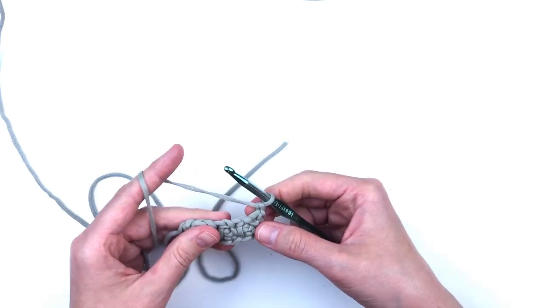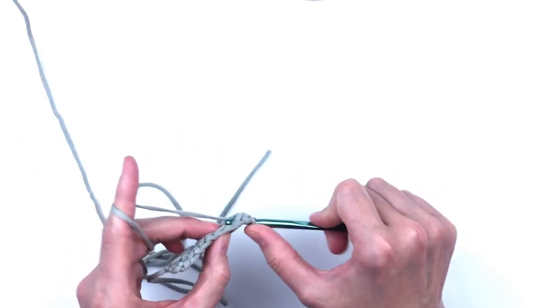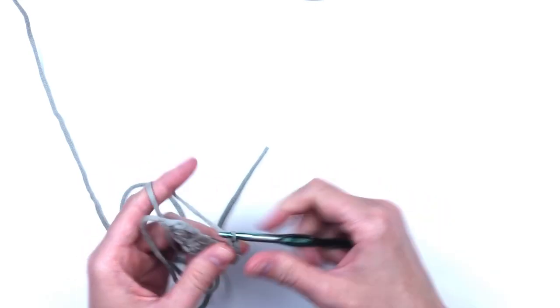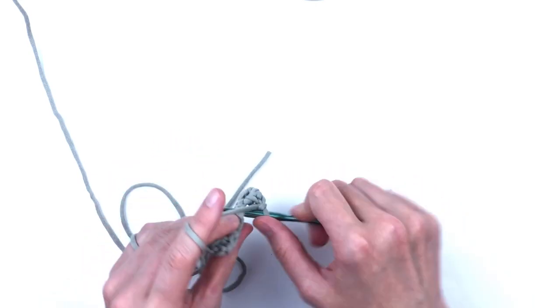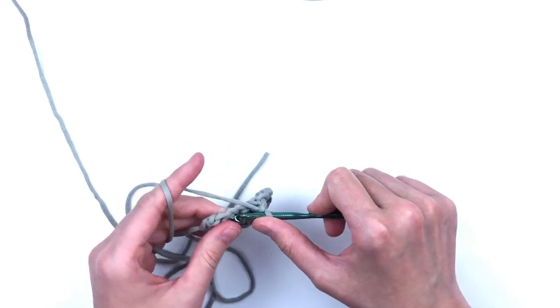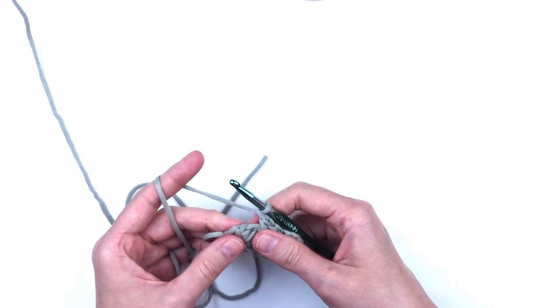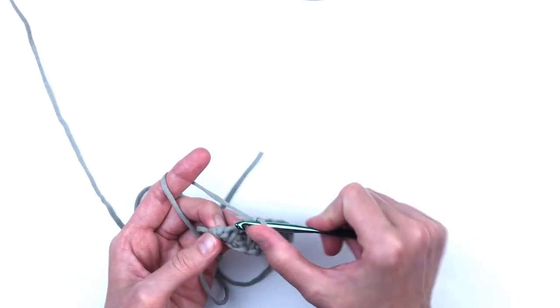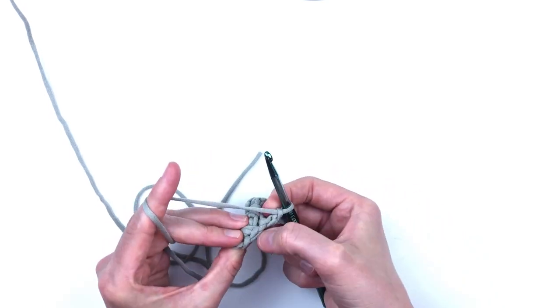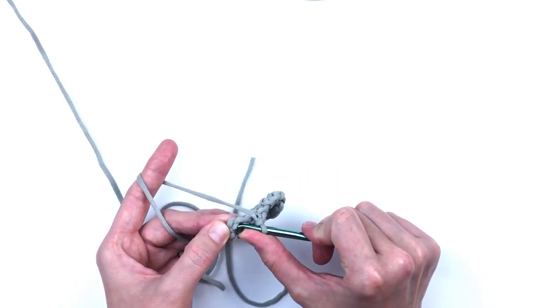Chain one and turn. Skip the single crochet and put a single crochet in the chain one space. Chain one, skip one, single crochet. Chain one, skip one, single crochet. Chain one, skip one, put a single crochet in the chain one that we made before we turned on the last row.